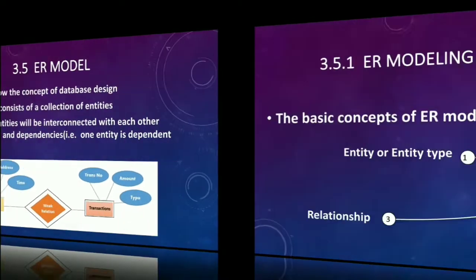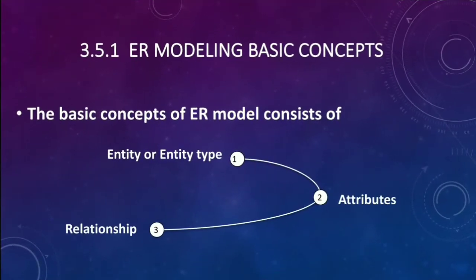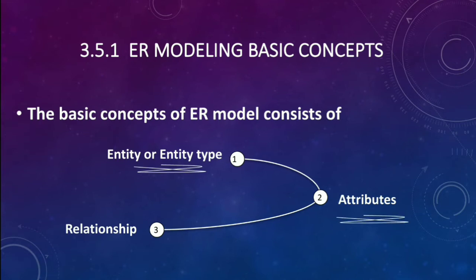Let's see how to design this ER model. The very first concept is ER modeling basic concepts. In this ER model we have three things: first is entity or entity type — entity means a table; second is attribute — attribute means the column present in the table; and finally relationship — the relationship between one table and another table.